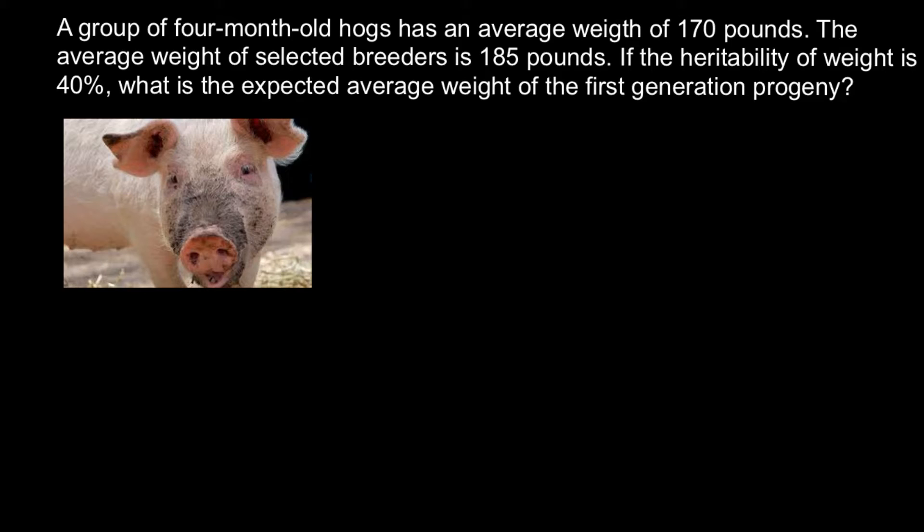Before I show you how to solve this problem, this is actually very easy, probably would take less than one minute. I want to show you a little bit of theory. Imagine that we have a graphic like this, and of course we would have on our farm different weights of animals. This may look something like this bell shape. So our original average would be 170 pounds.